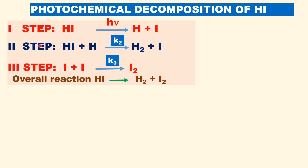The decomposition of HI takes place in three steps. In the first step, HI absorbs a photon of light to decompose to a hydrogen atom and an iodine atom. In the second step, the hydrogen atom formed in the first step is very unstable — it is an intermediate, highly unstable compared to the iodine atom — so it immediately reacts with HI to give H₂ plus I.